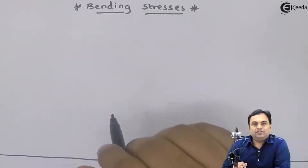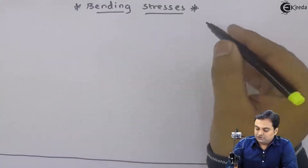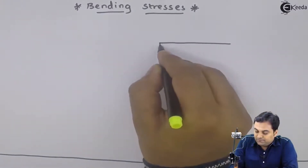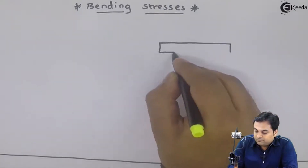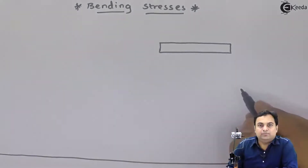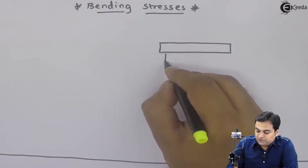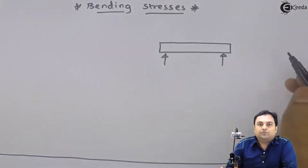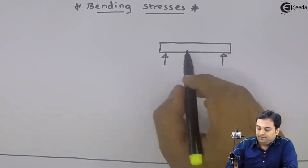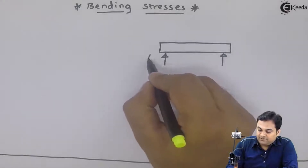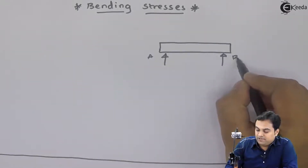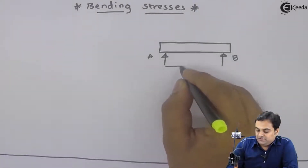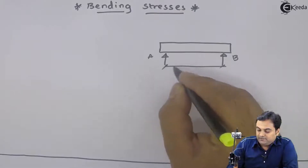What is the meaning of this? Suppose I have a horizontal member. I support this member on two columns — it is supported at A and it is supported at B. The length between A and B is L.